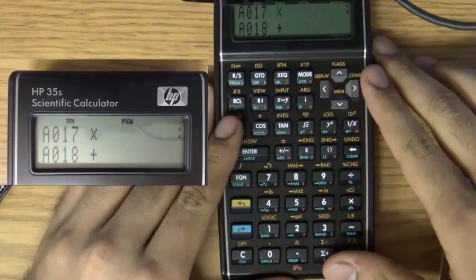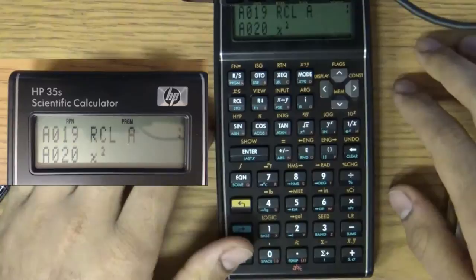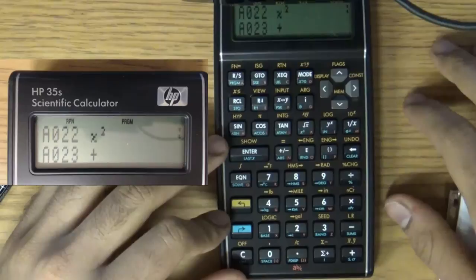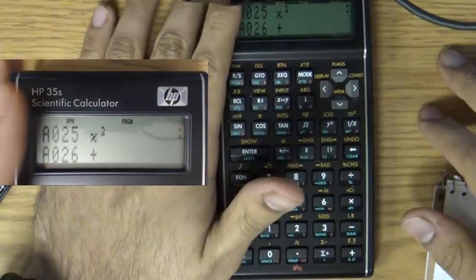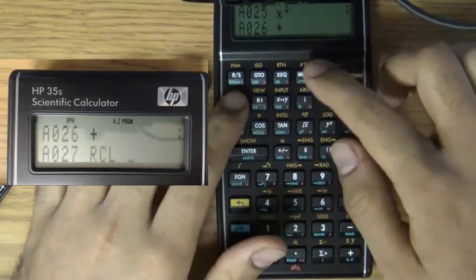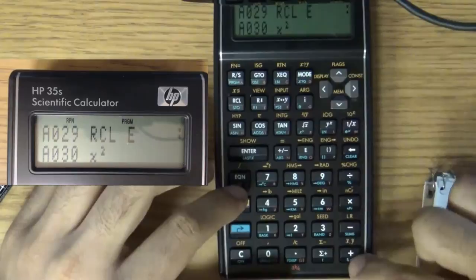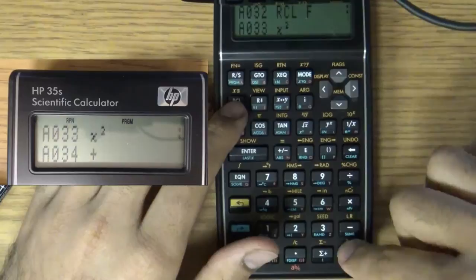First, we take A. Recall A, square it and then recall B, square that, and add them. And then we recall C, square that, add that. So, now we have the first sum in memory. Now, we go to the second vector. Recall D, square it. Recall E, square that, add them. Recall F, square that, add them again.